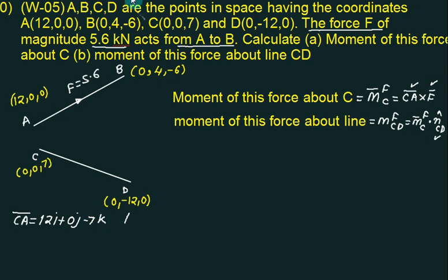Okay, next vector we will find out, CD, what is CD vector? So CD bar, what is CD bar means? D minus C, 0 minus 0, minus 12, 0, minus 12j, 0 minus 7, minus 7k. Okay, modulus of CD, modulus of CD is under root of 0 square plus 12 square plus 7 square, 13.89.